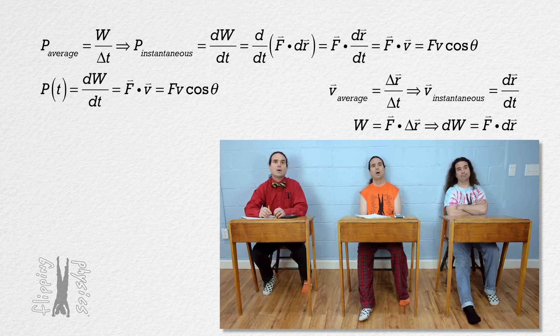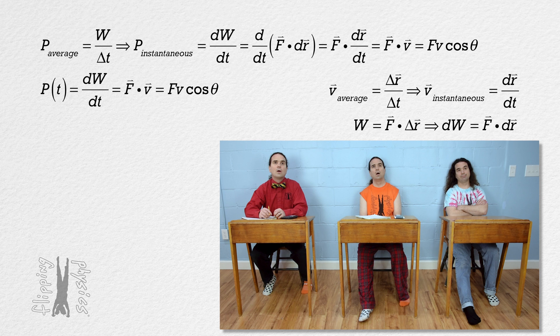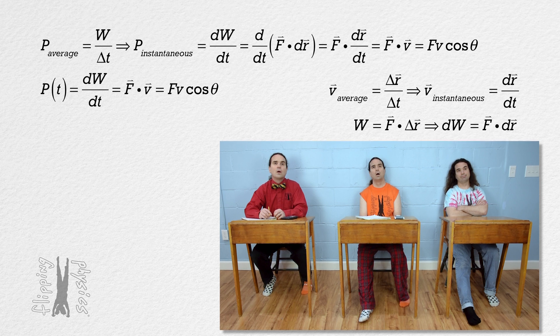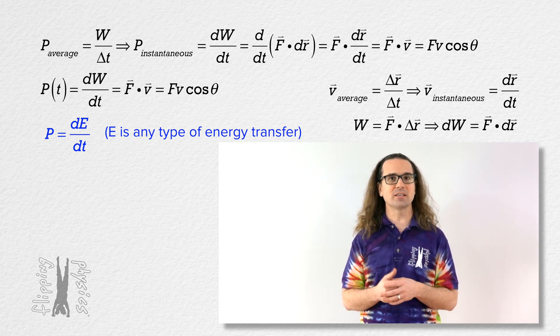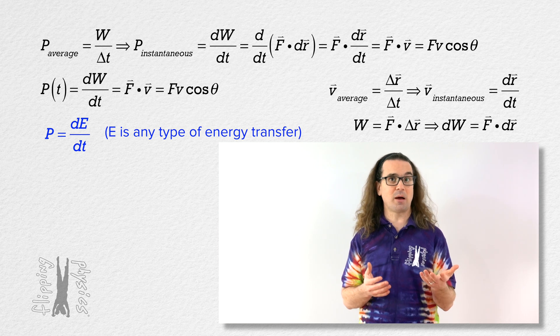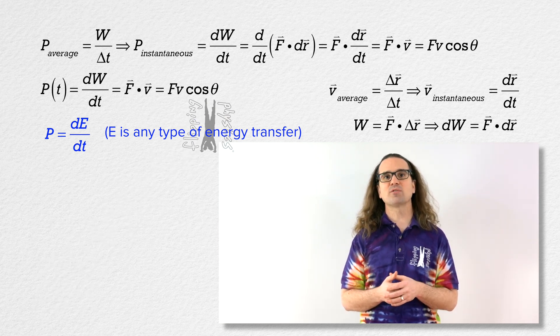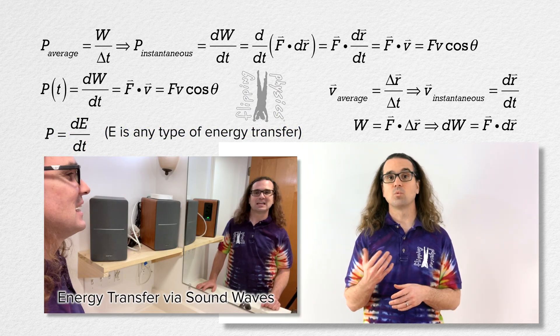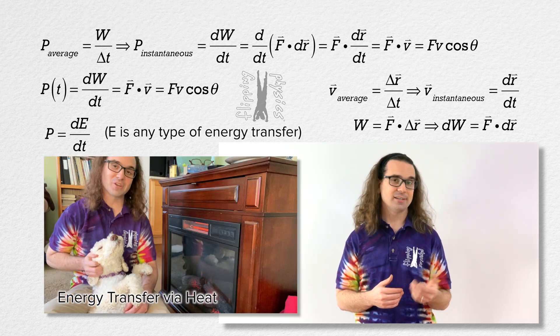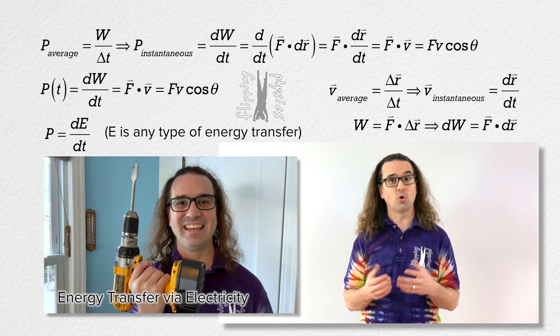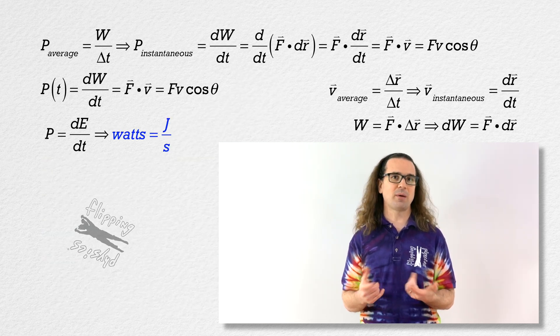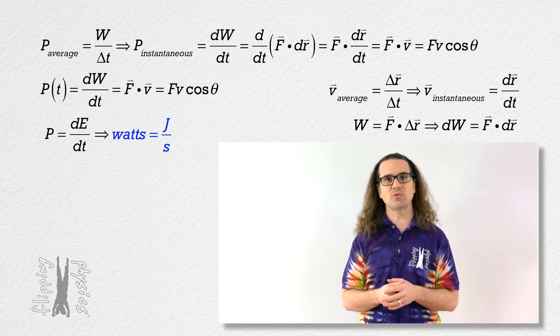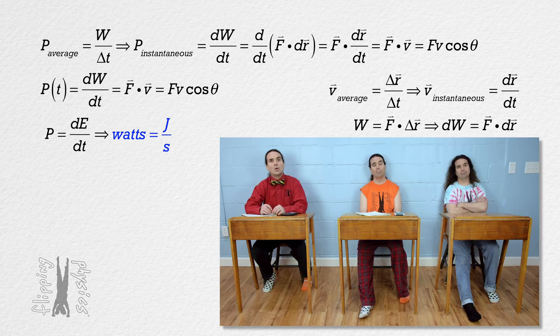And power does not have to be defined using work. It can be defined more generally using any type of energy transfer. Power equals the derivative, with respect to time, of energy transferred into or out of a system. For example, as we talked about before, energy can be transferred via waves, work, heat, electricity, or radiation. And the units for power are watts or joules per second because power is the rate at which energy is transferred into or out of a system.